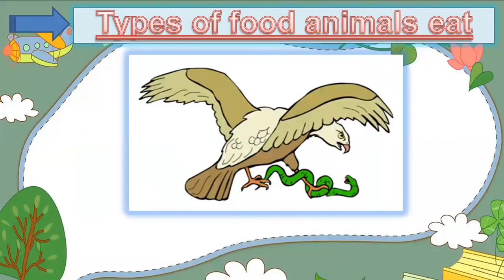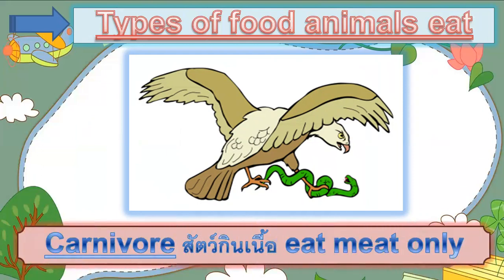Next, eagle. Eagle is eating a snake, so these animals eat other animals. What do you call them? They are carnivores. Carnivores eat meat or other animals only. Examples are eagle, tiger, lion, snake, crocodile, and alligator. Those animals are carnivores.